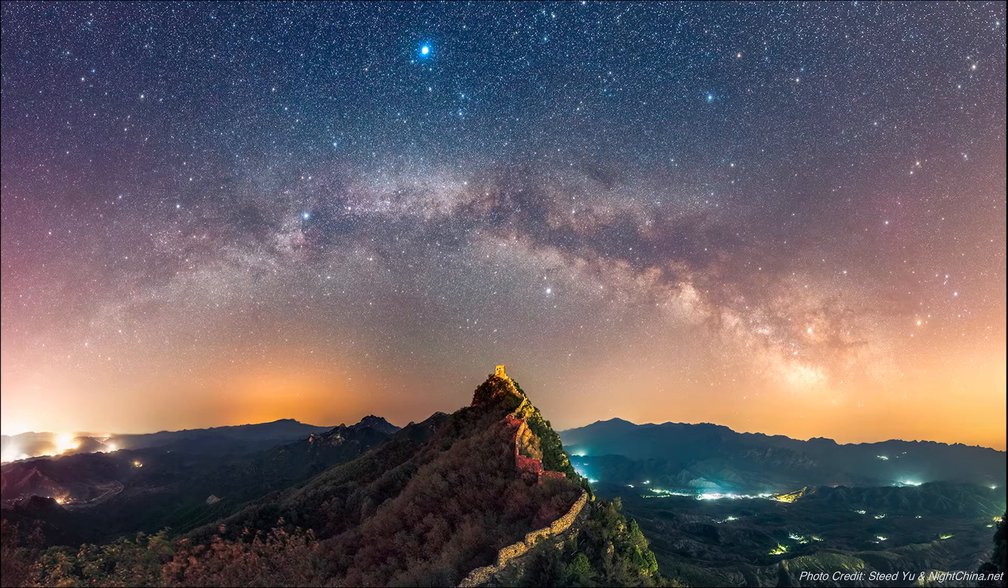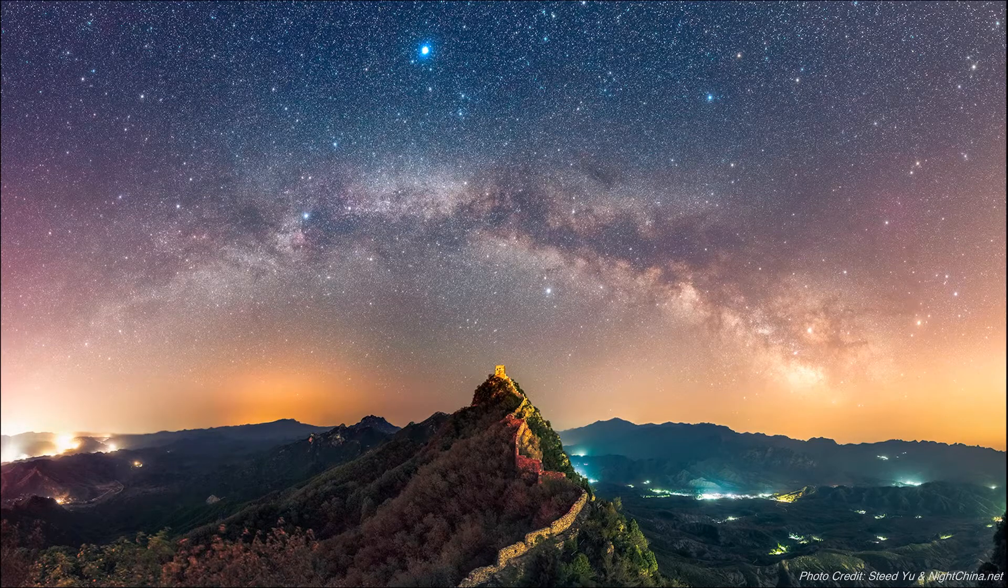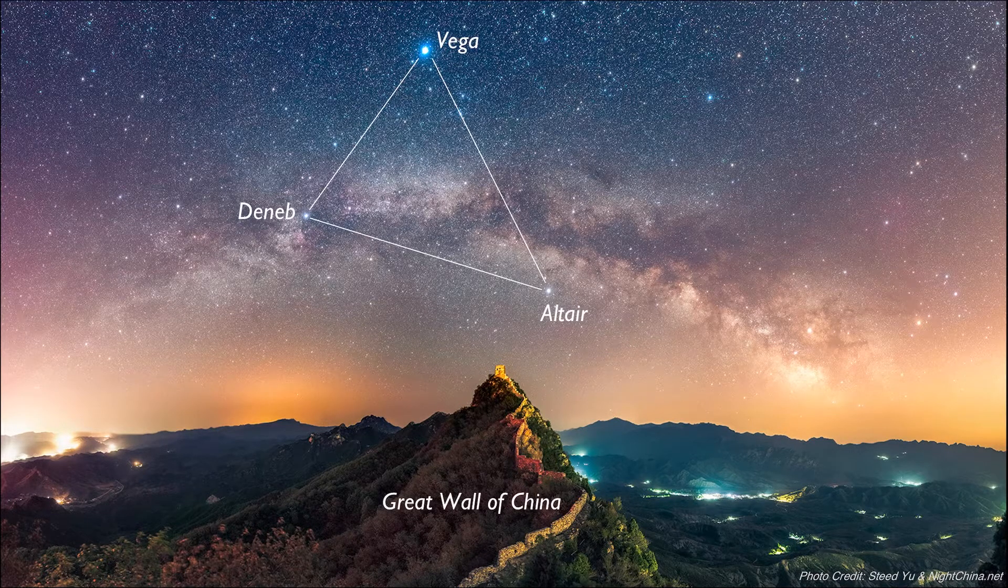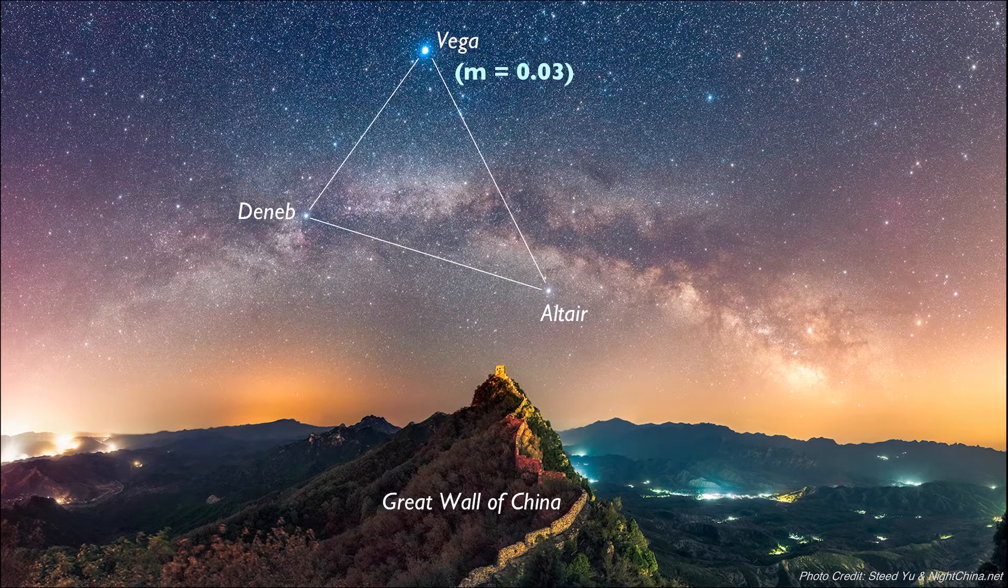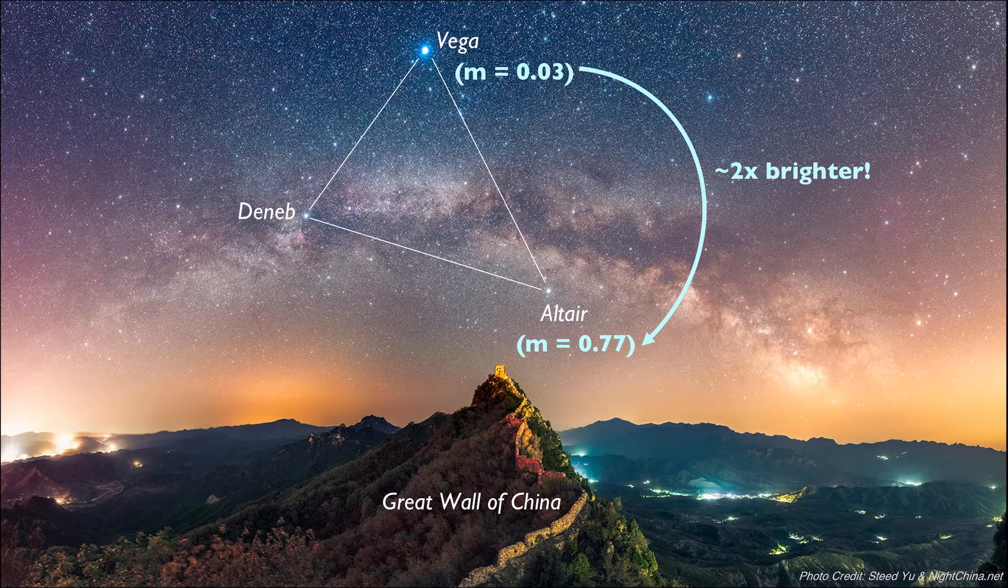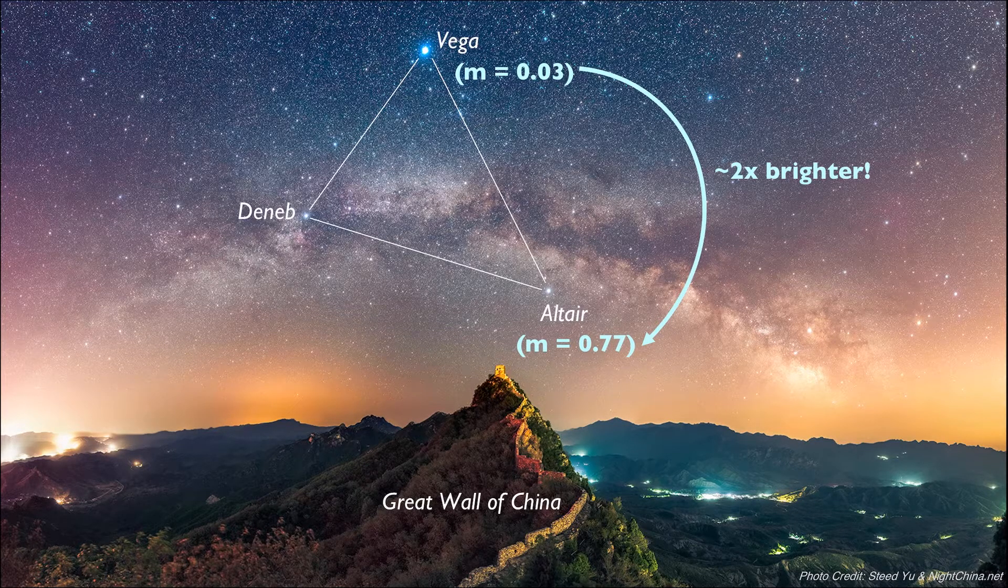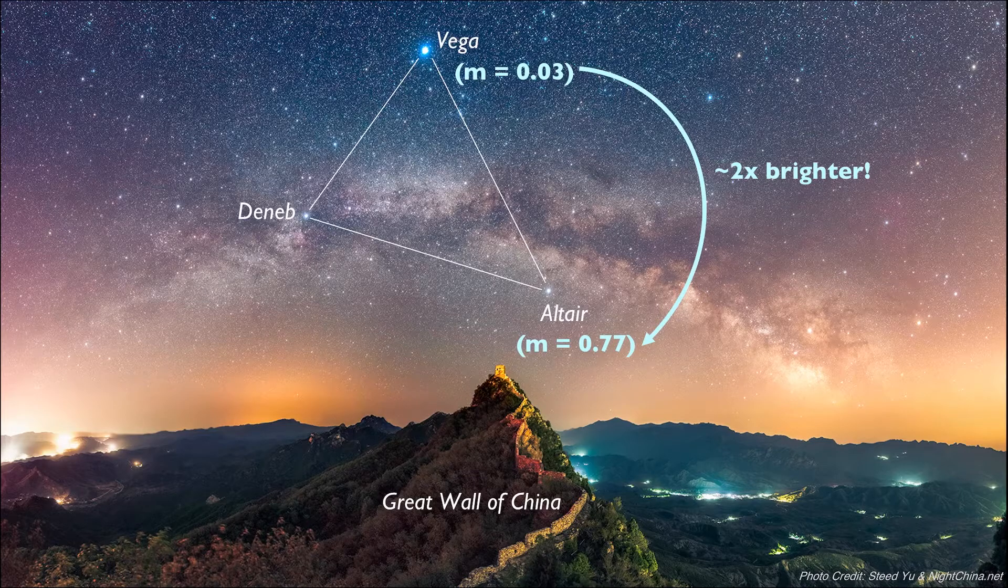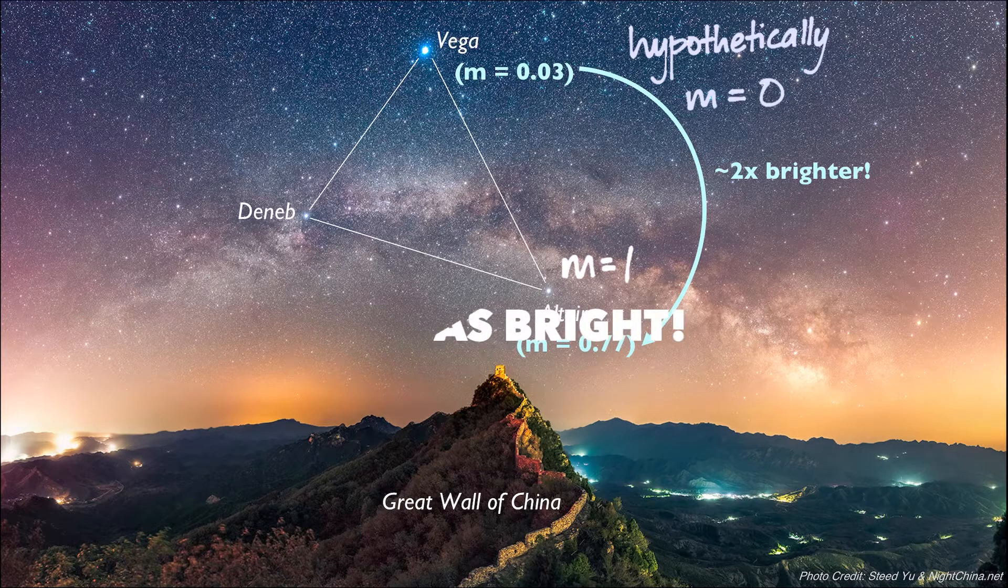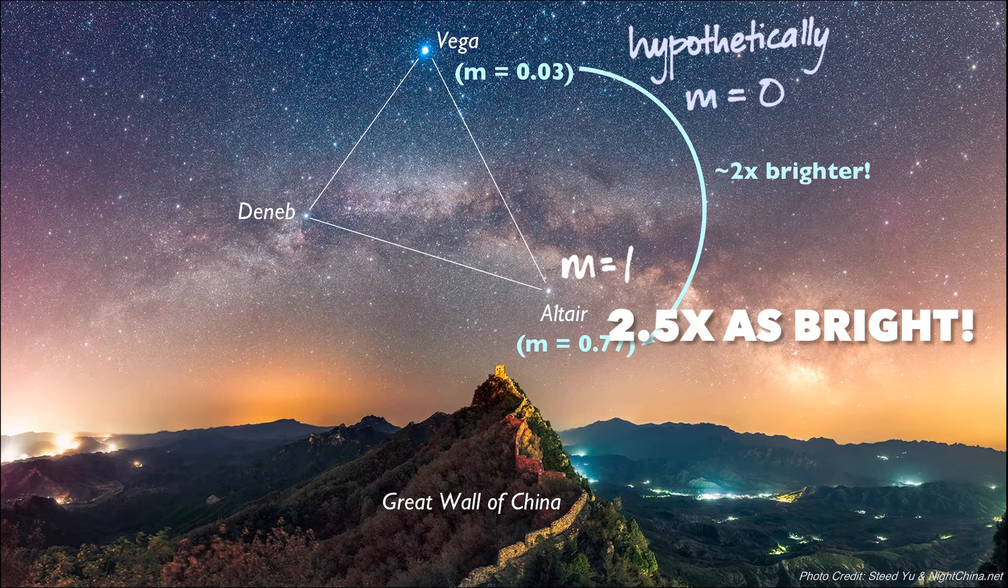In this picture taken here of the stars of the Summer Triangle, seen here over the Great Wall of China, Vega is the brightest with an apparent magnitude of 0.03, making it almost exactly twice as bright as Altair, whose apparent magnitude is 0.77. Remember that if the jump had been a solid 1 magnitude, say from 0 to 1, then Vega would have been exactly 2.5 times as bright as Altair.